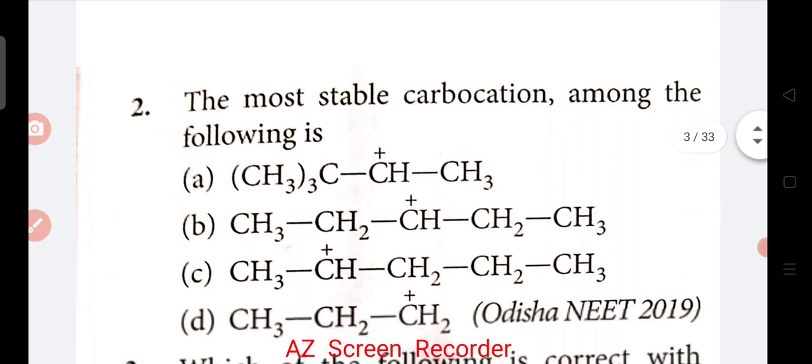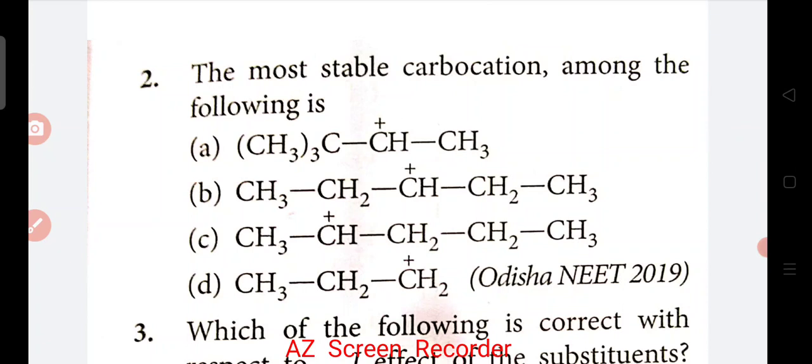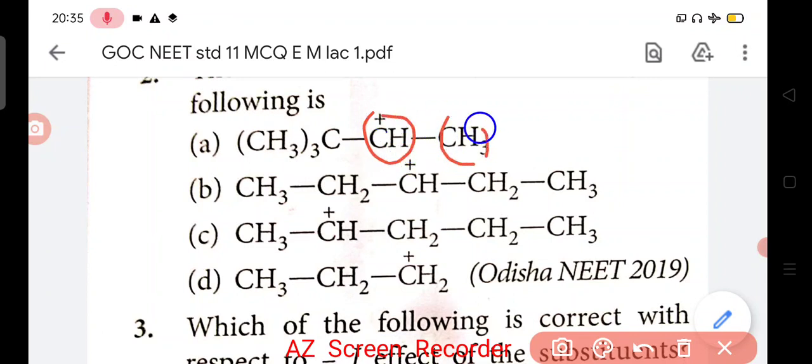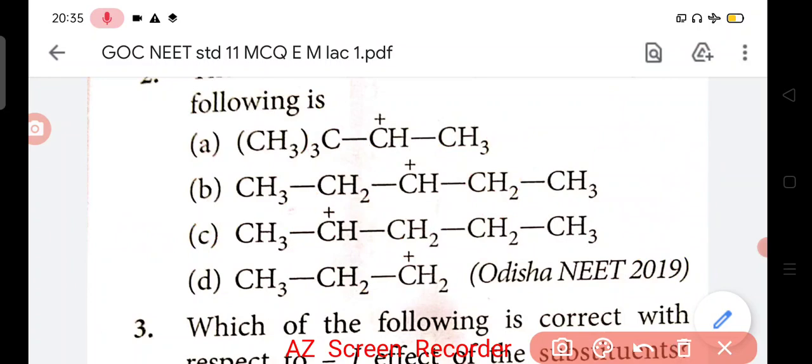Now, question number second. The most stable carbocation among the following is. Yes, we can give answer with help of hyperconjugation. So here, alpha hydrogen zero. Here, alpha hydrogen is 3. Then yeh wala 2, plus 2, both sides alpha, 4 alpha hydrogen. Here is 3 into 5. Here is only 2. So obviously, answer will be C.